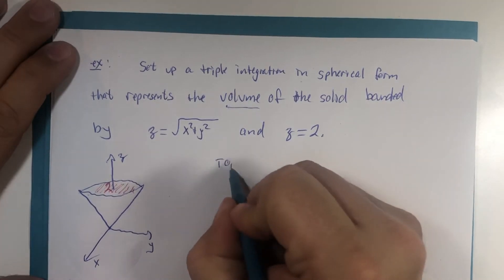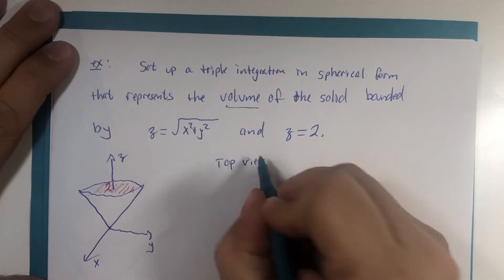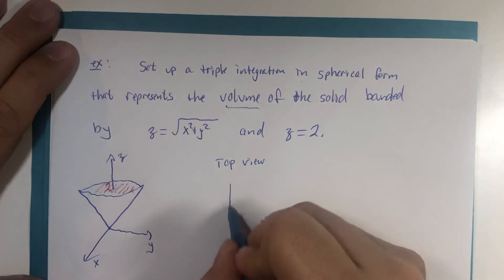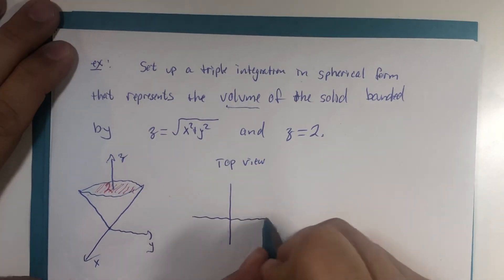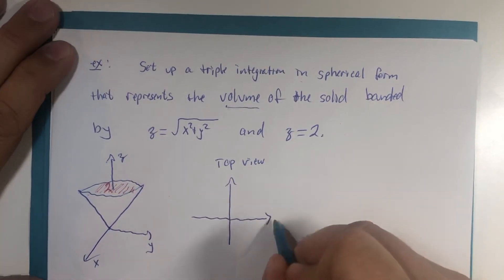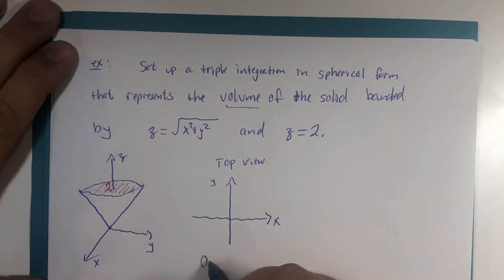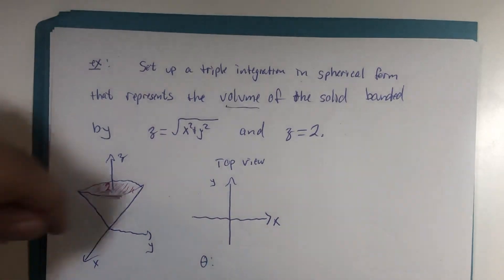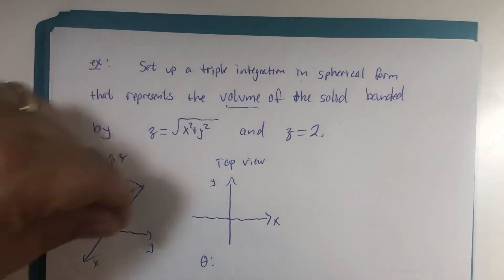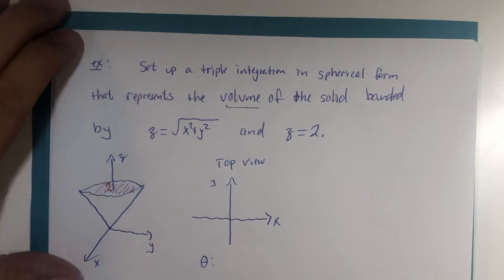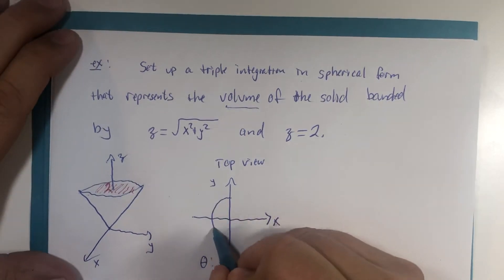So once again, top view. Primary purpose of the top view in spherical coordinates is to give me my values for theta. And we should know by now that that rotates fully around the z-axis. A nice little circle.